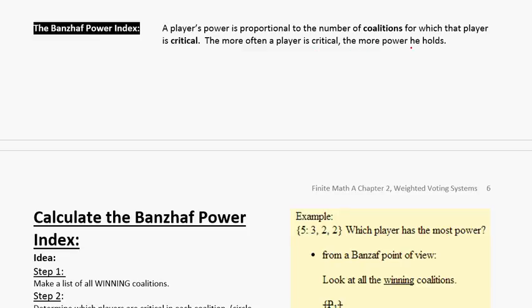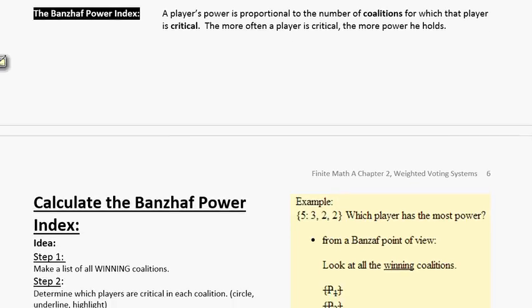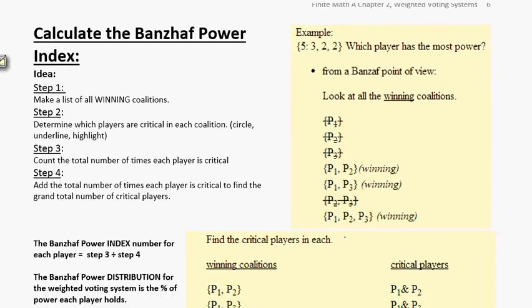To calculate the Banzhaf power indexes, we're going to follow a series of steps. Over here on the right is an example already done: [5; 3, 2, 2]. So I have a quota of five, and the question asks which player has the most power from a Banzhaf point of view. Step one is to make a list of all winning coalitions. I don't care about losing coalitions — I only want winning coalitions, so I need to consider how many ways people could vote together.